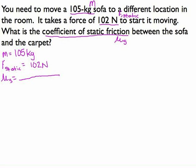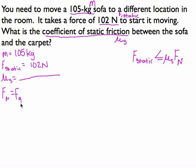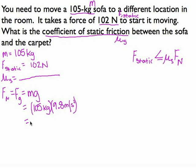Looking at the formula: F-static is less than or equal to the coefficient of static friction times the normal force. The normal force, if you remember from your free body diagrams, is always equal to the gravitational force. And your gravitational force is just your mass times gravity. So we're going to use this sofa's mass to calculate the gravitational force. Our little g is 9.8 meters per second squared. So 105 times 9.8 is 1029 newtons, and that's going to be your normal force.